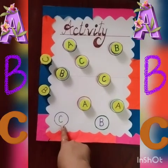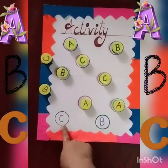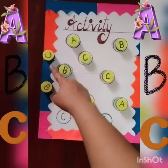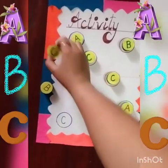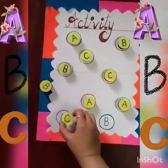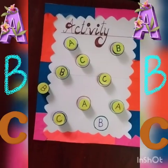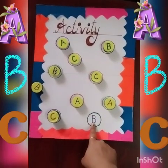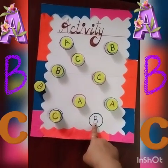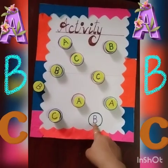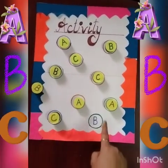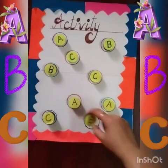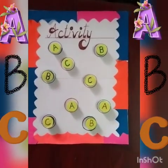Which letter is this? It is letter C. Where is letter C? It is C. So we will keep it here. Last one — which letter is this? It is B. Where is the letter B lid? It is here. We will keep it here.